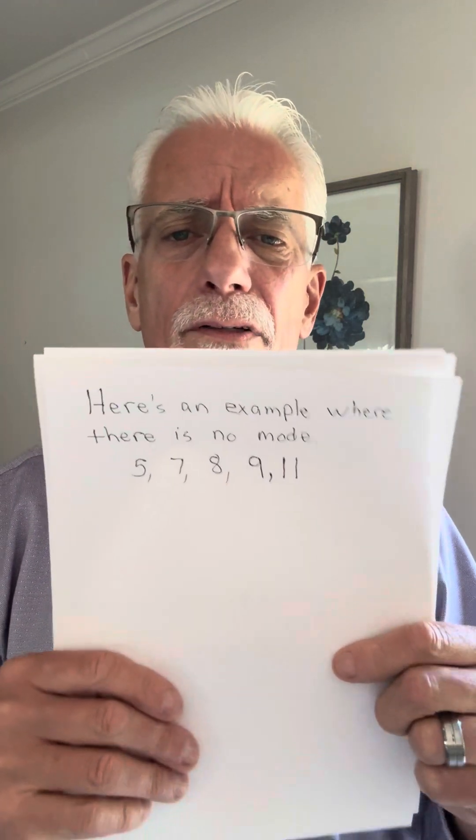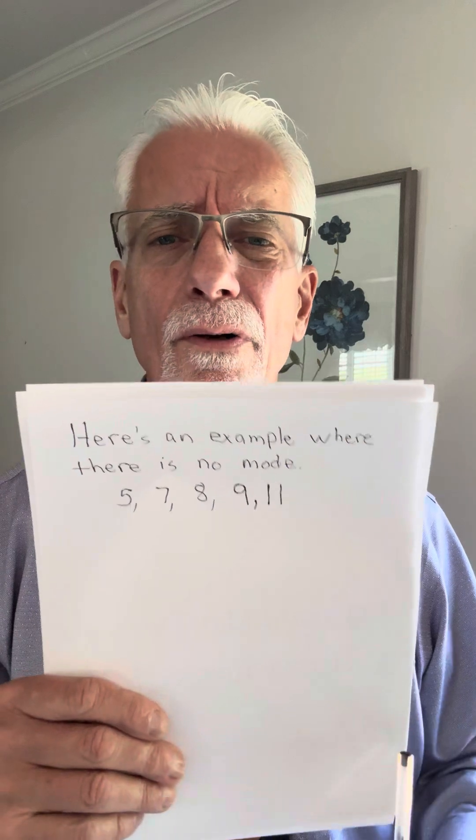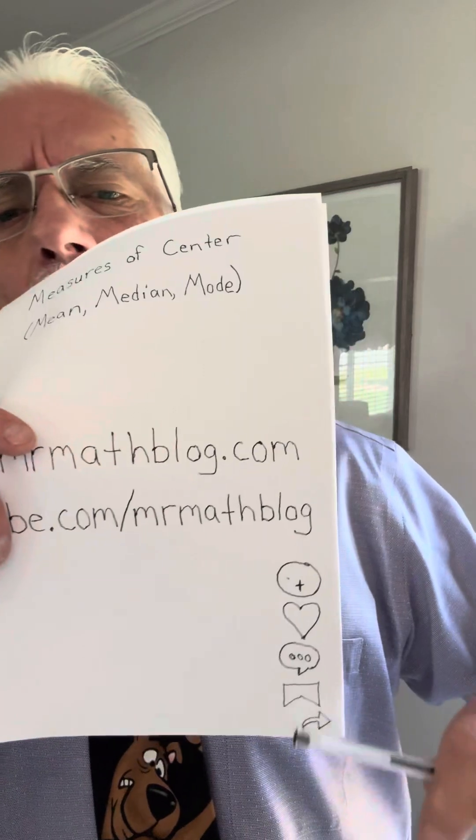Sometimes you have more than one mode, sometimes only one mode. Here's an example where there is no mode — no repeating number, so no number appears more than any other. You might have no mode, one mode, or more than one mode — sometimes even three modes or more. Alright, you guys, if you're still with me, don't forget to start at the bottom and just go up. I appreciate you guys, and peace out.